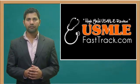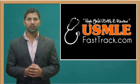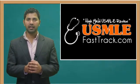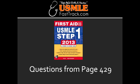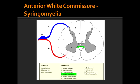Welcome to USMLEfasttrack.com. The section we're going to talk about today is from First Aid for the USMLE Step 1, 2013 edition, page 429: Spinal Cord Lesion — Syringomyelia.